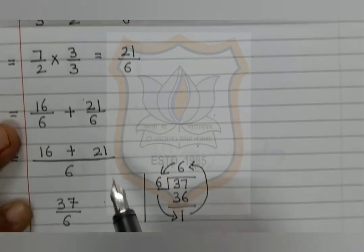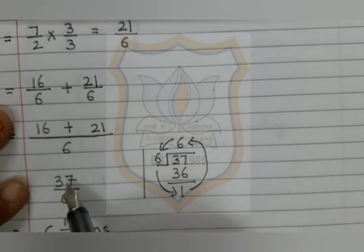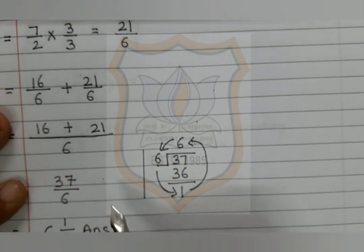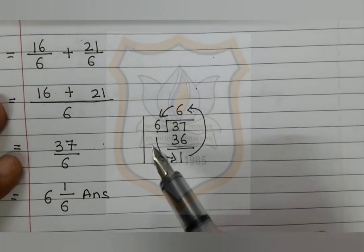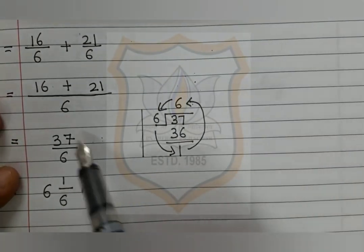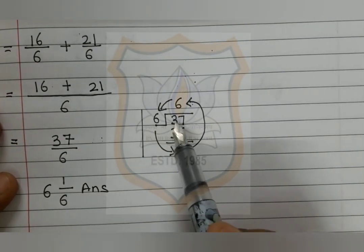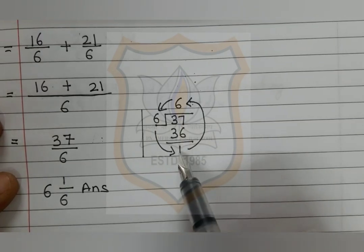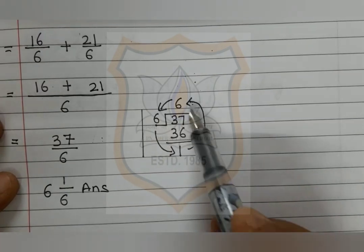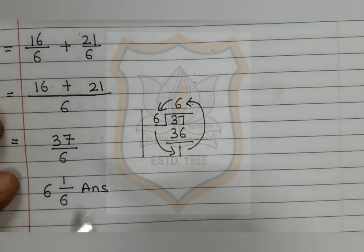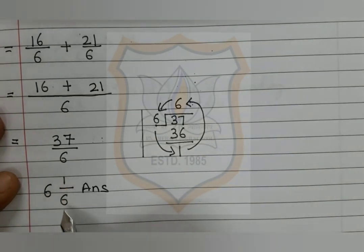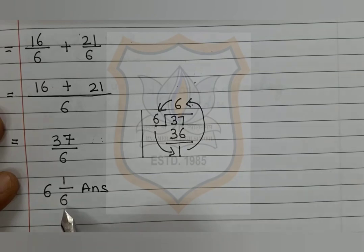16 plus 21 equals 37 upon 6. This is an improper fraction, so we convert it to a mixed fraction. Dividing 37 by 6: 6 sixes are 36, remainder is 1. The quotient is 6, remainder is 1, and divisor is 6. Moving anticlockwise, our mixed fraction becomes 6 and 1 upon 6. This is our answer.